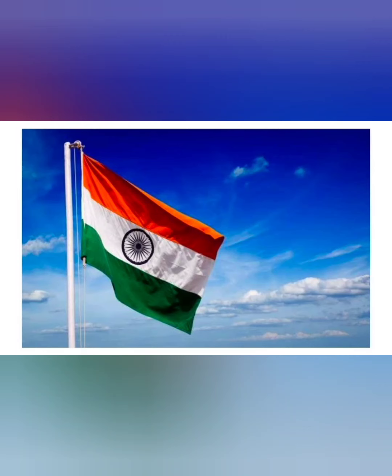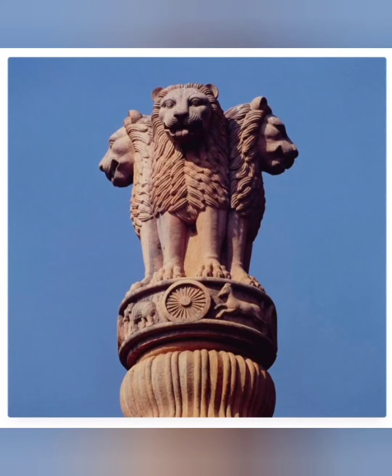A flag of any country is the pride of its citizens. Our national flag is also called the tricolor. It has three horizontal bands of the same width — saffron in the topmost band, white in the middle band, and green in the bottommost band. There is a blue-colored wheel in the white band, taken from the Ashoka pillar, with 24 spokes representing 24 hours in a day.